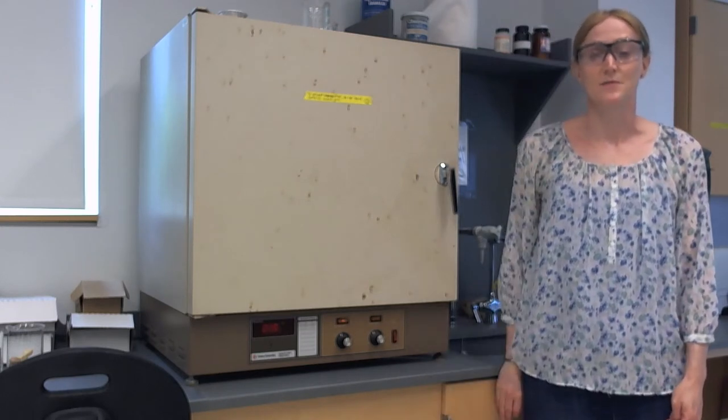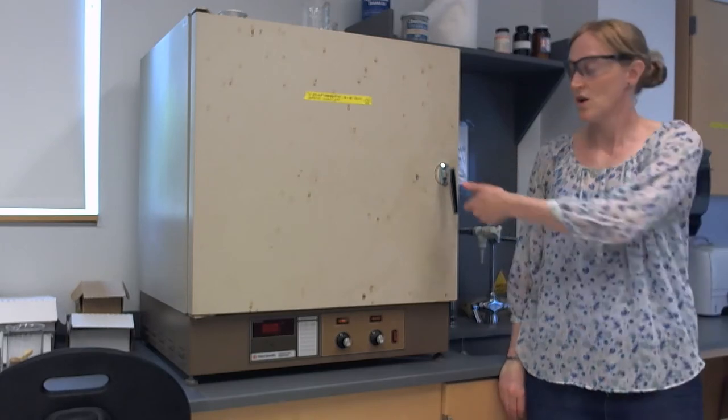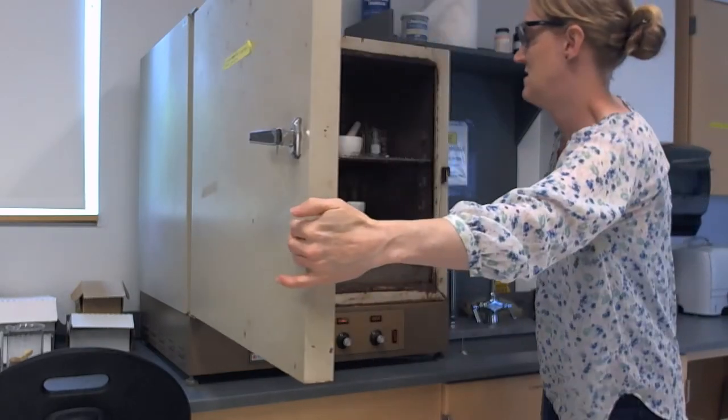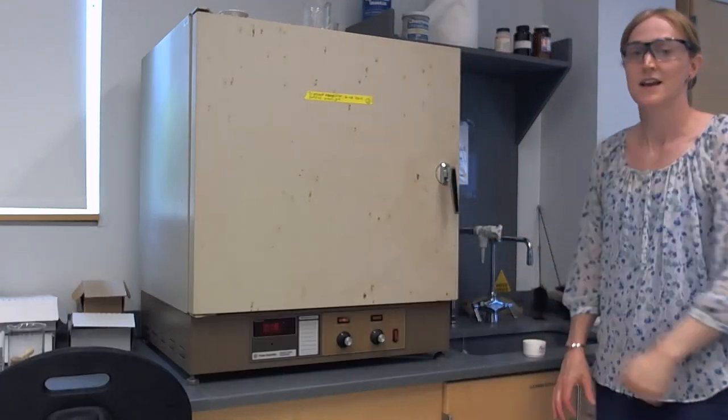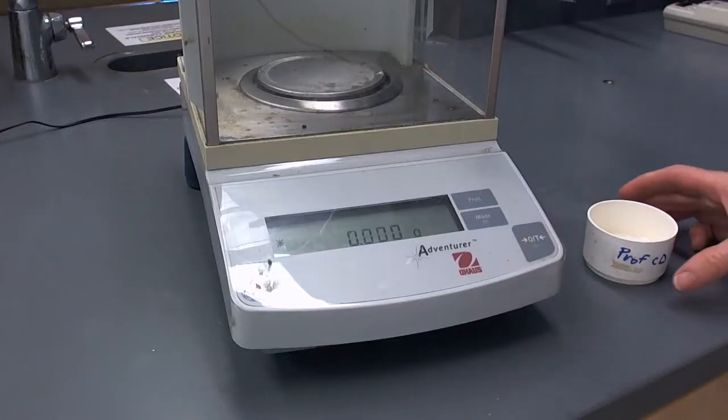So 60 minutes is a nice first drying time to get rid of most of the water. After that first 60 minute drying period, come back to lab, remove your sample, take it out, let it cool, and then go measure the mass again. Now let's measure the mass.